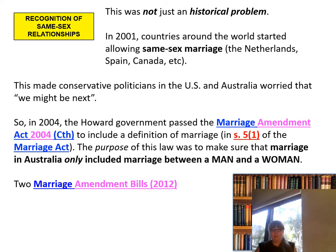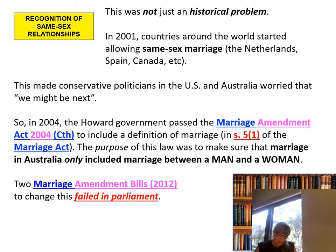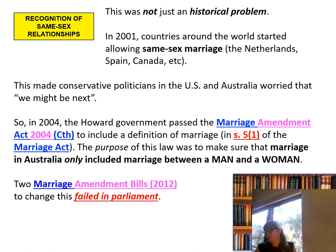Two marriage amendment bills in 2012 to change this failed in Parliament. When I got married in 2008, I asked my wedding celebrant to mumble that line — it actually was a line that had to officially be part of any marriage ceremony, that marriage is between a man and a woman. I had some same-sex couples at my wedding, friends and family members, and while I wanted my wedding to be legal, I didn't want them to be offended by it, so I asked if he would just mumble that line a little bit.